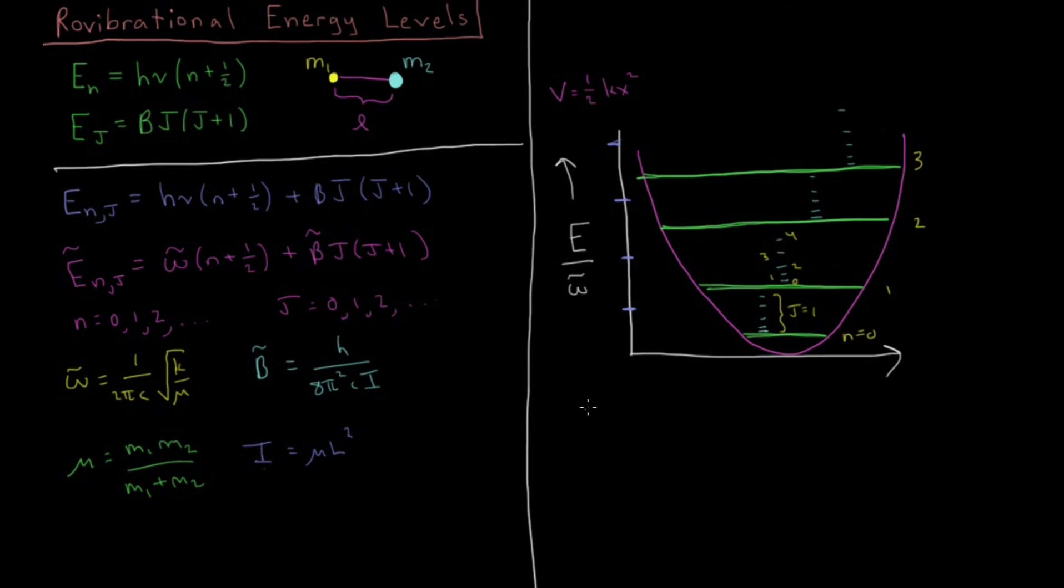So in the next video we're going to look at what the differences in these energy levels are and what the selection rules for rovibrational spectroscopy are and then what kind of spectrum results.